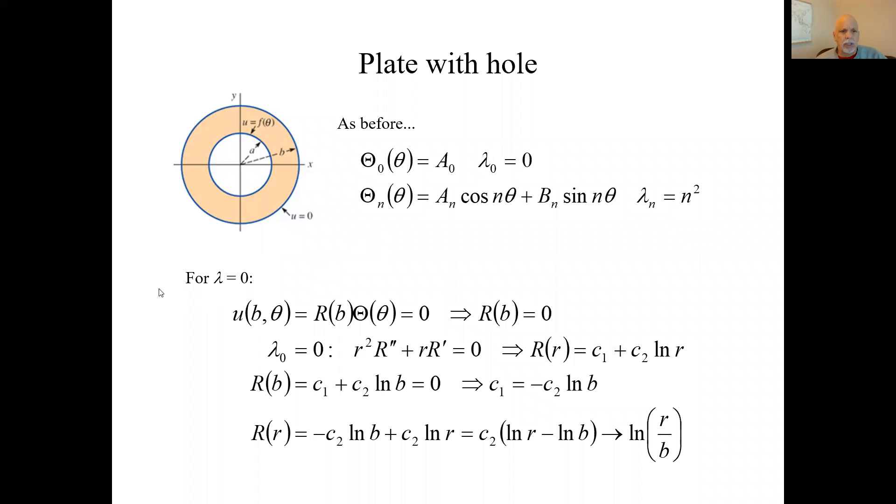So let's look at the lambda equals 0 case first for the R equation. Here's the general solution for the R equation. On this outer edge, R equals B. So we plug in B for R, we get this, which gives us a relationship between C₁ and C₂. Or we can plug in for C₁ here.